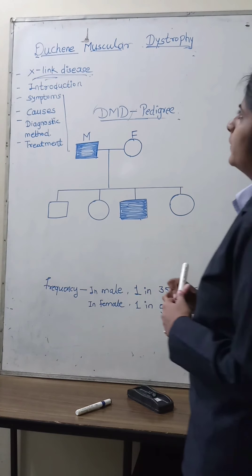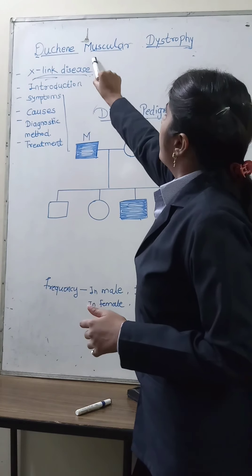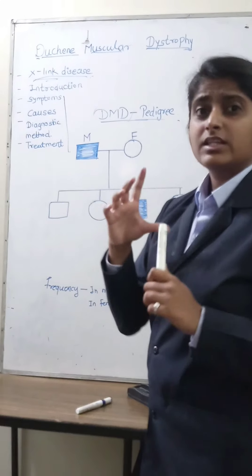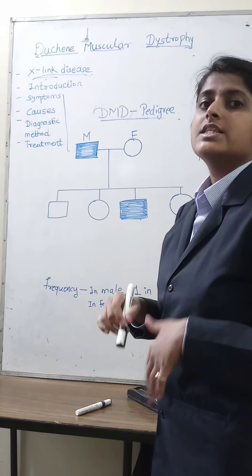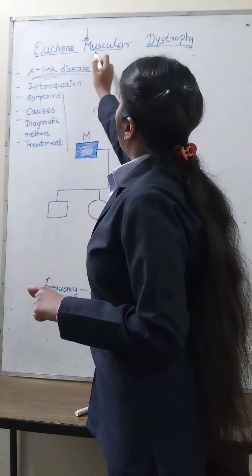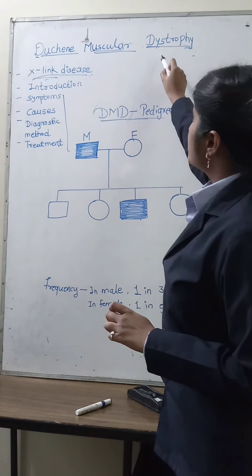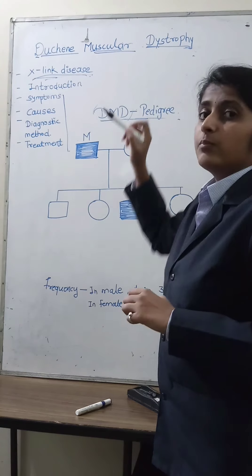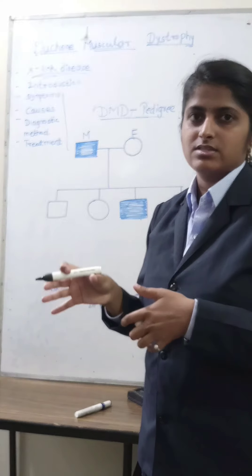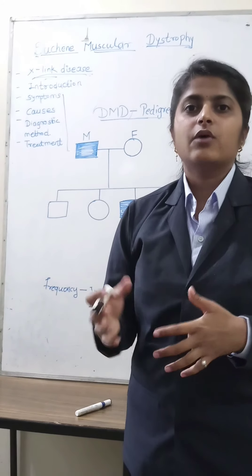Now we will see the introduction of dystrophy. What is muscular dystrophy? Duchenne's muscular dystrophy is a severe type of disease which is related to our muscles. Dystrophy means the protein dystrophin is lacking in the muscles — there is a deficiency of this protein in our muscles.